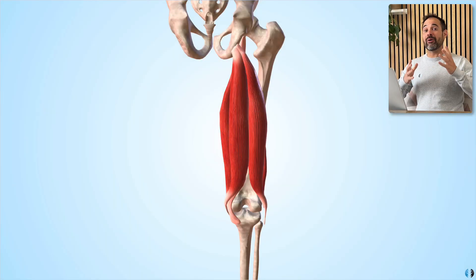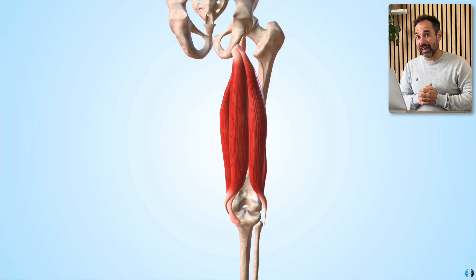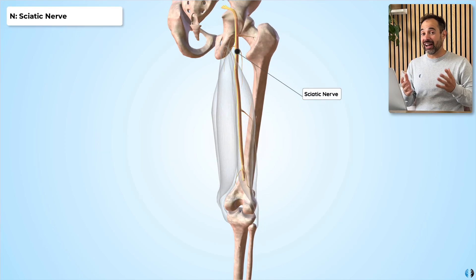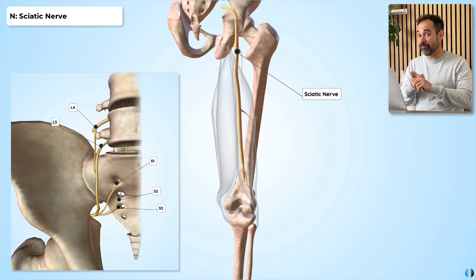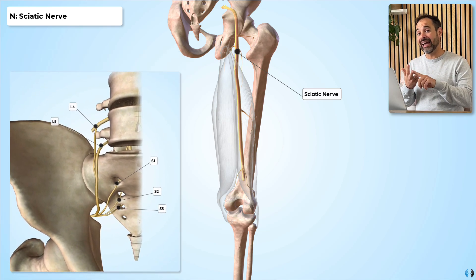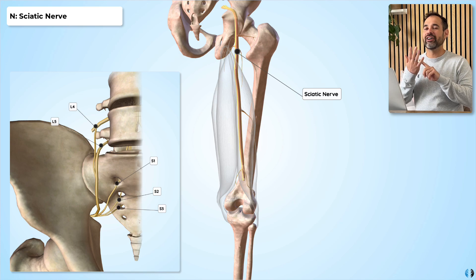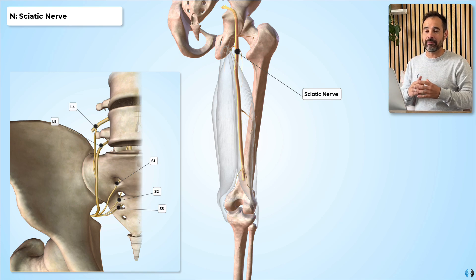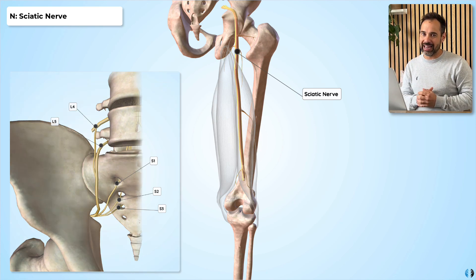Next, let's talk about nerve supply. The hamstrings are innervated by the sciatic nerve, which takes its nerve supply from L4, L5, S1, S2, and S3 nerve roots. It has a broad nerve supply because it's such an important nerve that innervates so much of the leg.